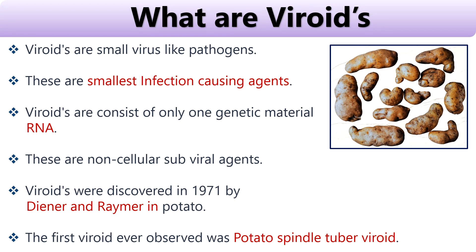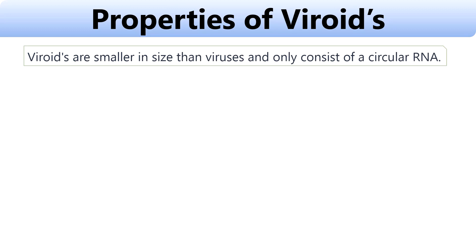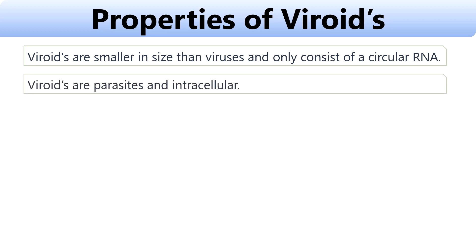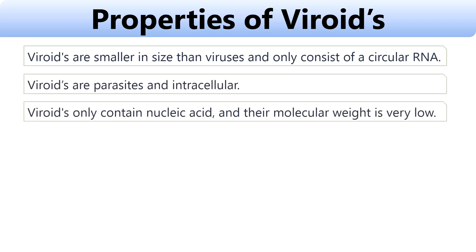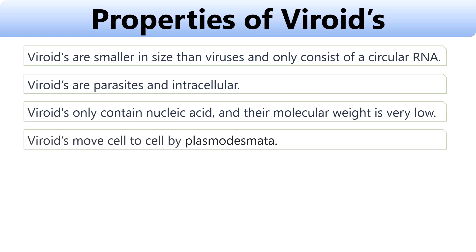Viroids are smaller in size than viruses and only consist of a circular RNA. Viroids are parasitic and intracellular. Viroids only contain nucleic acid and their molecular weight is very low. Viroids move cell to cell by plasmodesmata and cover long distances through the phloem.